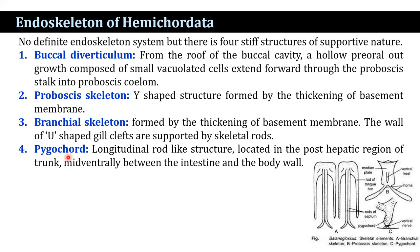The buccal diverticulum is a hollow pre-oral outgrowth from the roof of the buccal cavity, composed of small vacuolated cells that extend forward through the proboscis stalk into the proboscis coelom. Initially they were considered as a notochord, but later studies suggest it is homologous — not analogous — to the notochord of chordates.